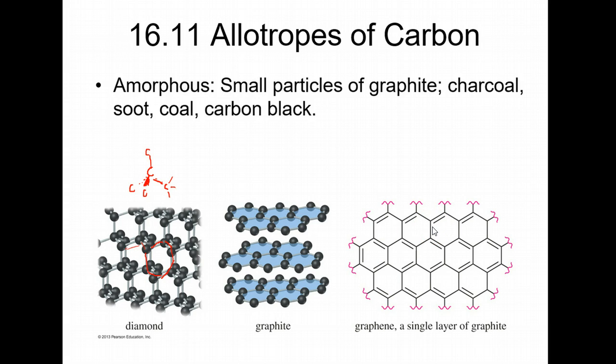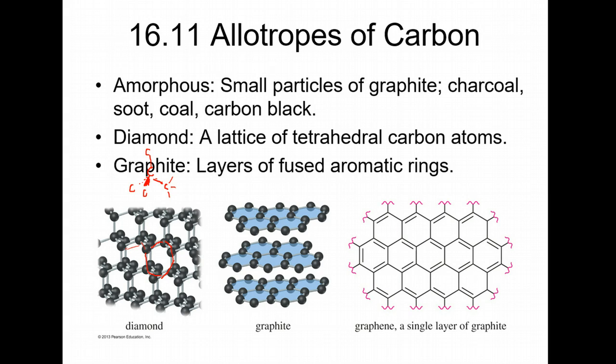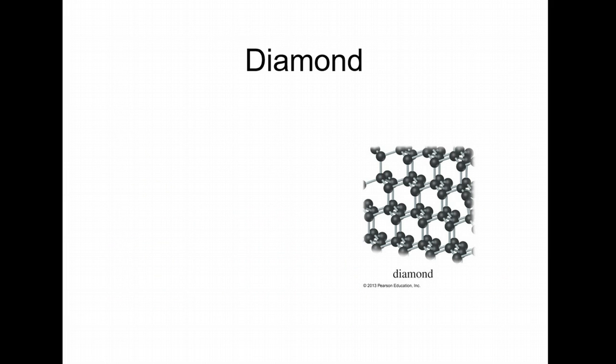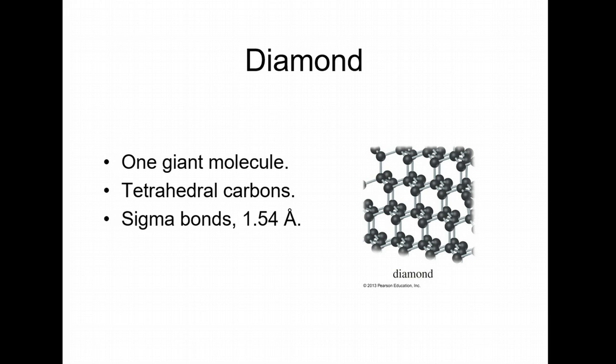Small particles of graphite - charcoal, soot, coal, or carbon black - are amorphous forms of carbon, meaning it's all these combined. A diamond is tetrahedral carbon in chair conformations and graphite are layers of fused aromatic rings. Here's more information on diamond. A diamond is basically one molecule. If you have a diamond - your earrings, a ring, a bracelet - it's one molecule. I'm emphasizing that because I think that's fascinating. It's because all these carbons are hooked all together.